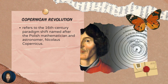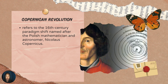So let's move on to the Copernican Revolution. It refers to the 16th century paradigm shift named after the Polish mathematician and astronomer Nicolaus Copernicus. Nicolaus Copernicus re-formulated the heliocentric model of the universe. Because at that time, people believed that the Earth is the center of the solar system. It was based on the geocentric model of Ptolemy.